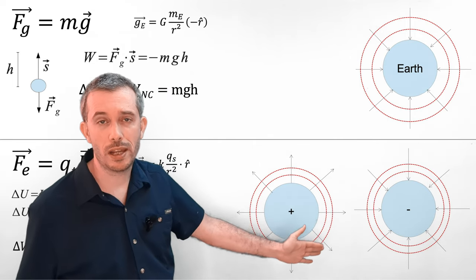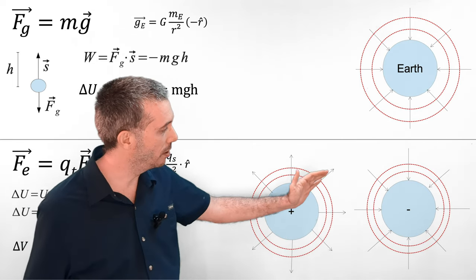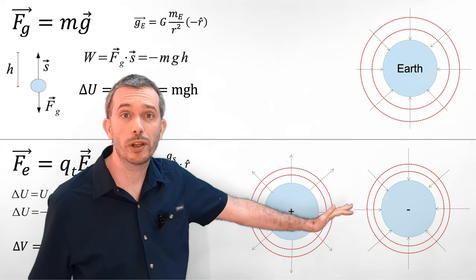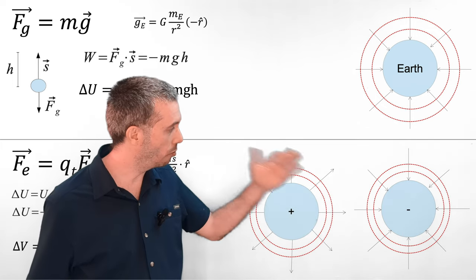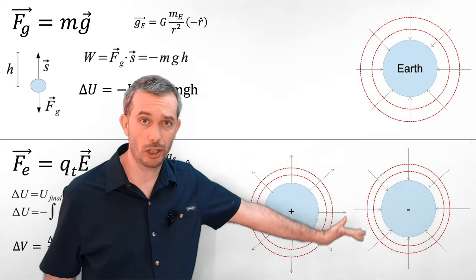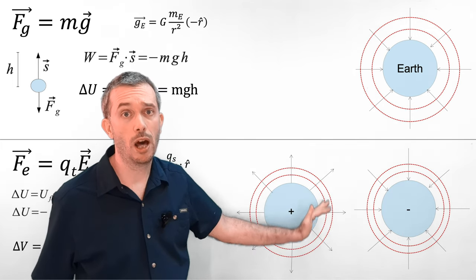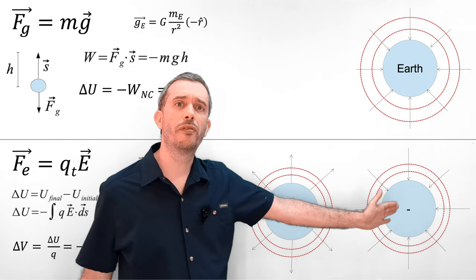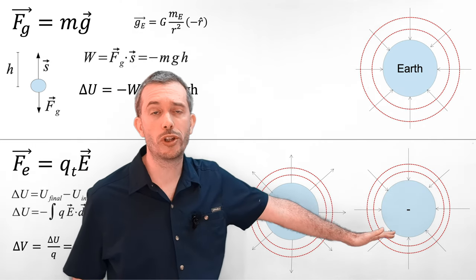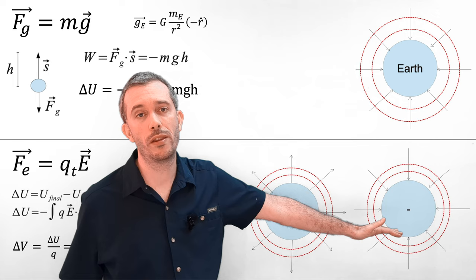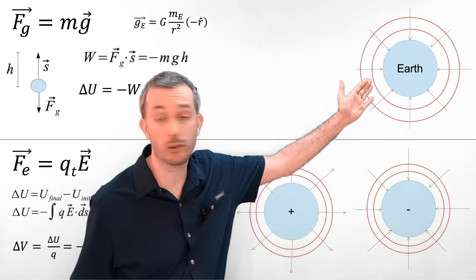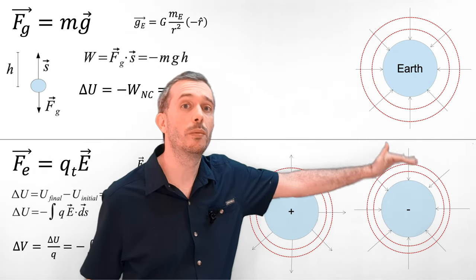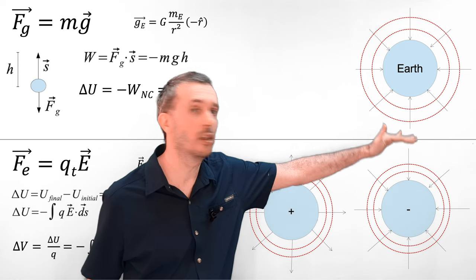Now with the electric field, we can do exactly the same, where we have these red lines here that are perpendicular to the electric field, which represent the equipotential lines around a point charge. If we have a negative point charge, then the potential behaves similar to gravity — that is, the further we go away, the more potential we have.